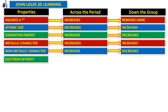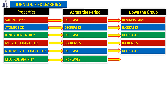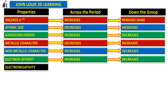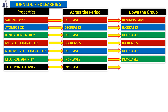Electron affinity increases across the period, therefore down the group it decreases. Electronegativity also increases across the period, therefore down the group it decreases.